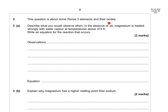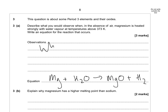This question is about period 3 elements and their oxides. Describe what you would observe when magnesium is heated strongly with water vapour in the absence of air at temperatures above 373 K, and write an equation. The equation is: Mg + H₂O → MgO + H₂. With steam, you make magnesium oxide and hydrogen. What would you observe? Magnesium oxide is a white powder — that's your first observation — and you'd see a white or bright flame.